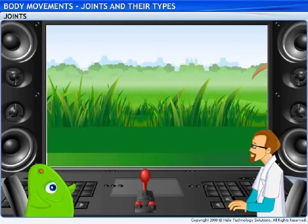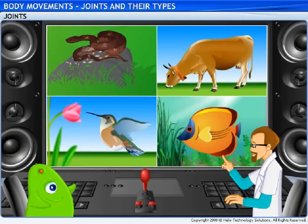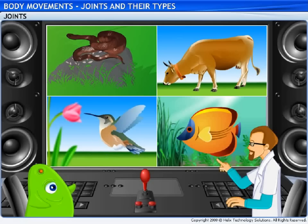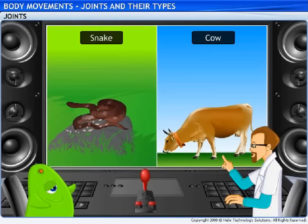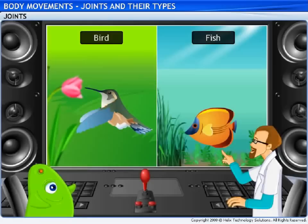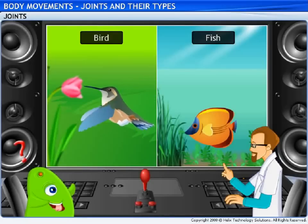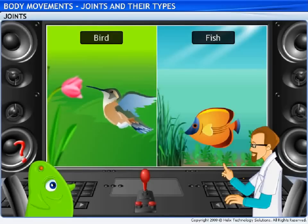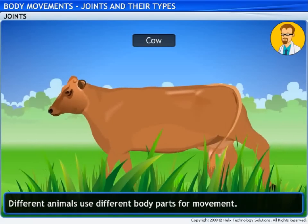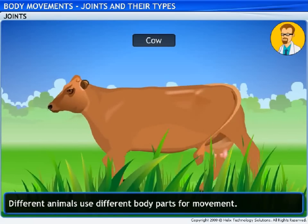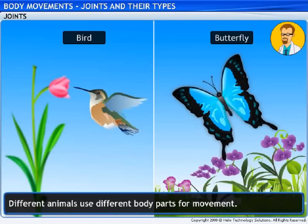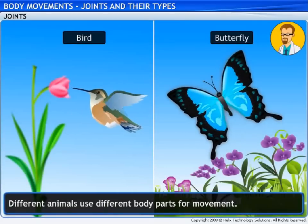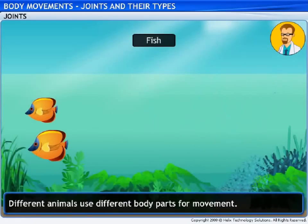So do animals have joints too? For instance, that kangaroo that's jumping — how does it move from one place to another? Well, animals have a different framework. Different types of animals move differently. For example, a snake moves differently from a cow, as does a bird from a fish. Cows use their legs to walk, while a snake uses its body to slither. Birds and insects use their wings to fly, while fishes use their fins to swim through water.